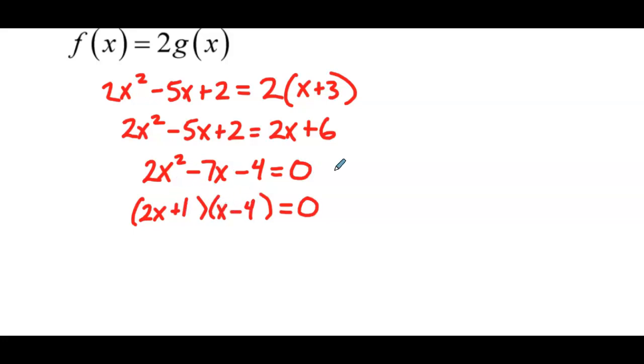Remember, you can always do grouping here as well. You would wind up with the same two factors. So that means either 2x plus 1 equals 0, or x minus 4 equals 0. So here x is equal to negative 1 half. Here x equals 4.